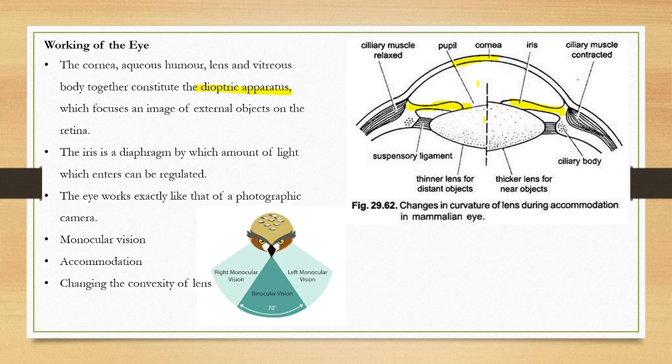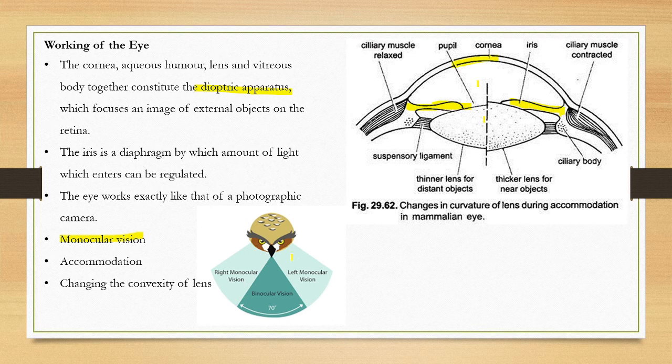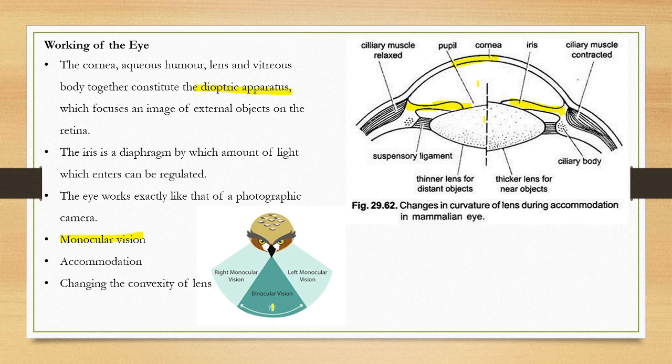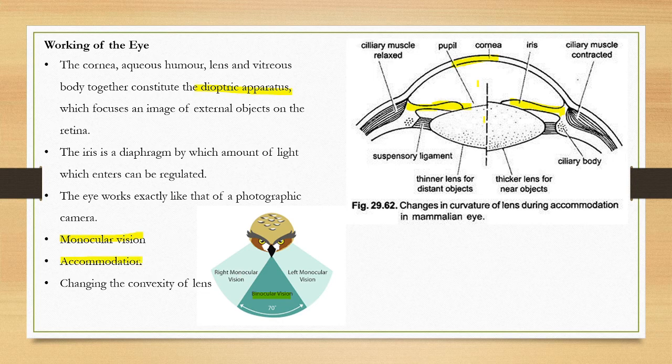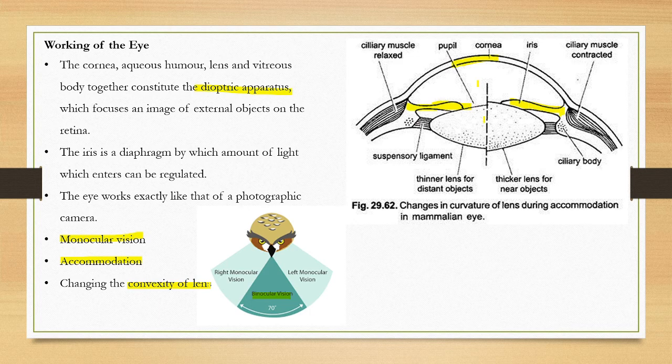Iris muscles by contraction and relaxation control light entering. In humans, left eye and right eye form separate images on the retina margin. In human, they combine left and right images forming a single image - that is called binocular vision. In rabbit, monocular vision. The power of accommodation: accommodation is the power in which the convexity of lens can be changed to see the near and distant objects clearly. Rabbits have limited power of accommodation.